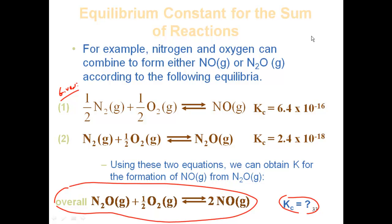The approach is to find a species that appears in only one of the given equations — not in two — because if it's only in one place, getting it to the right number of moles in the right location takes care of that equation cleanly. For example, oxygen appears in both given equations, so I'll avoid starting with it and instead focus on species that appear only once.